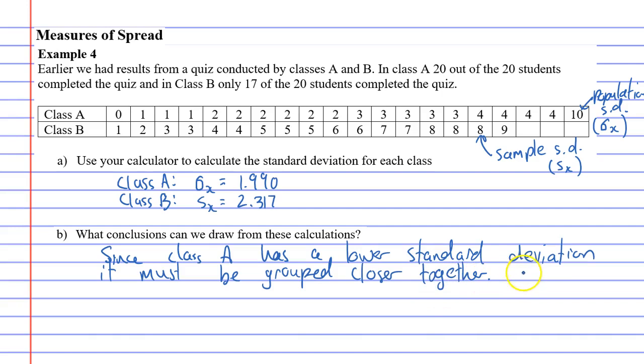And then we'll write, class B would be more spread out. And the reason for that is it's got a higher standard deviation. And when you think about that, that's actually very true. We mentioned earlier that class A was grouped closer together and class B was more spread out. So standard deviation can be a very useful tool to figure out the spread of data.